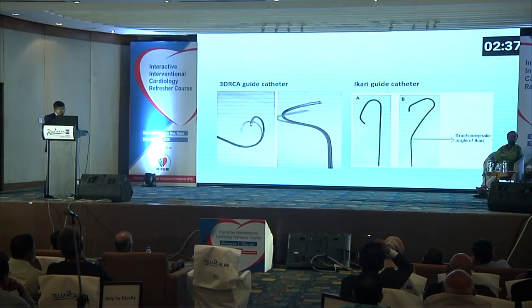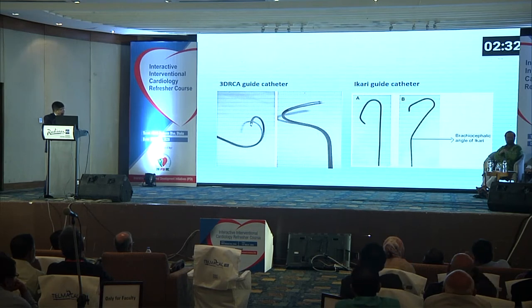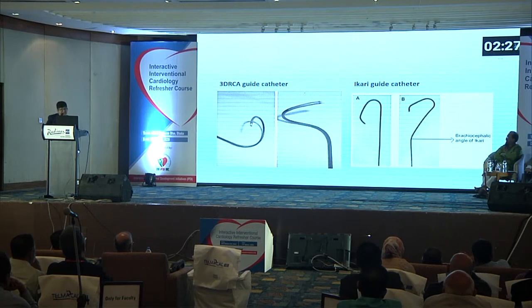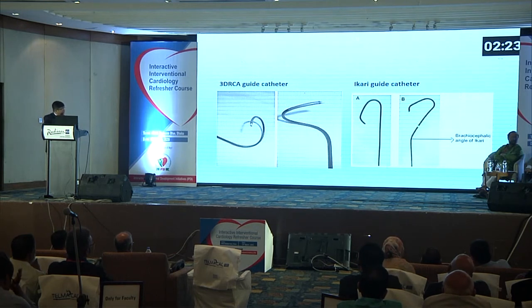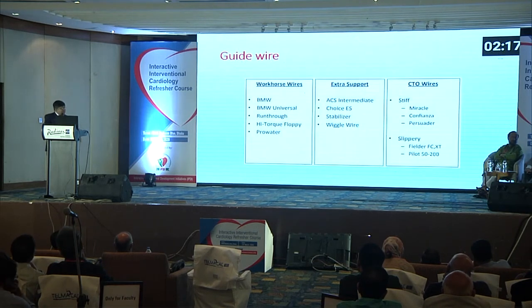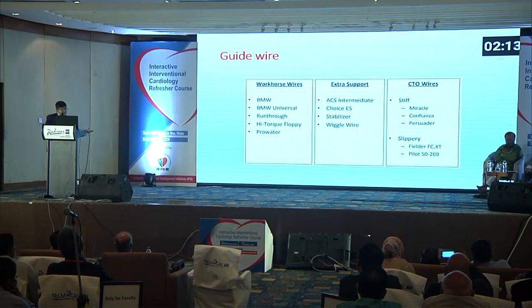Apart from these normal catheters, we do have some special catheters. The 3D-RCA guide catheter is used for anomalous origin of the right coronary artery. We also have the Ikari guide catheter, which can be used for the left coronary artery, and especially in the case of radial angiogram. In the case of PCI, normal guide catheters can also be used.